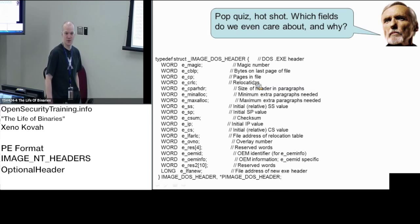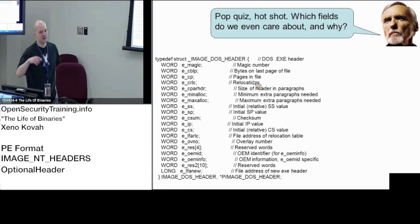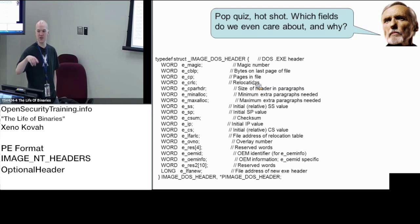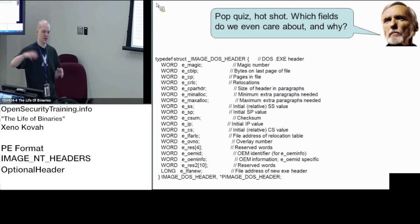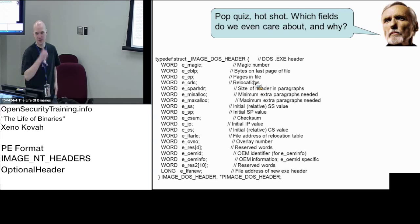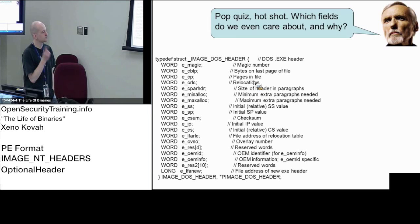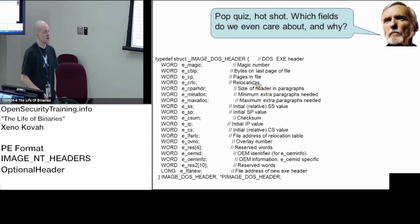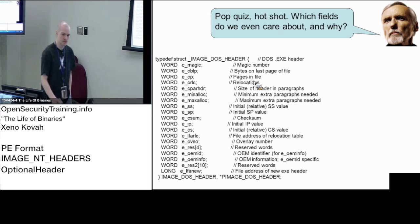Quick review: which fields do we care about and why? In this coming round two, when you're done it'll ask you five questions from round one. When you finish round three, it'll ask five questions from round one and round two — always pulling random questions from previous rounds to reinforce earlier material. So, which two fields do we care about? Magic — so you can see how the file will be processed by the loader.